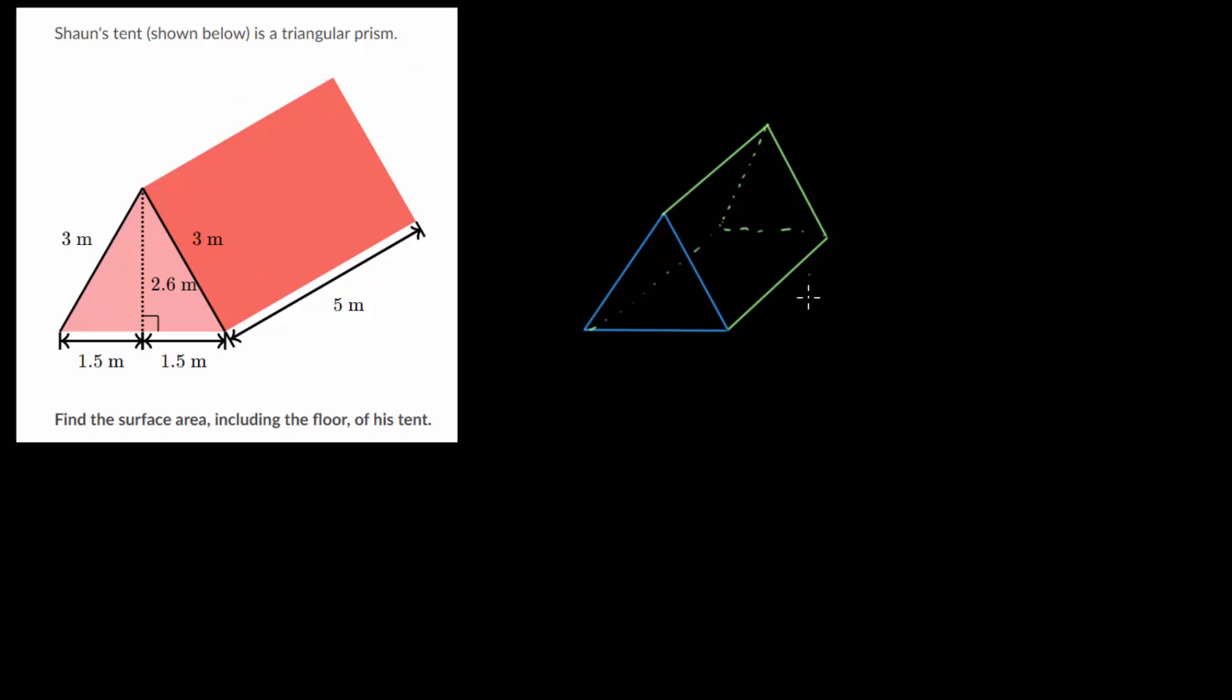So we can see all the different faces of this prism. Since when we're trying to find surface area, remember that we're trying to find the total area that the outside of the shape occupies. So essentially, we want the area of the triangular face on the front and the back, and then we want the area of each of these rectangular faces.